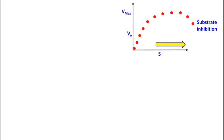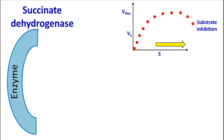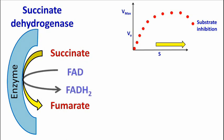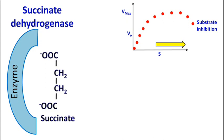Let's understand this with an example. The enzyme succinate dehydrogenase converts succinate to fumarate with the use of FAD. This enzyme usually binds a single molecule of succinate and converts it into fumarate.